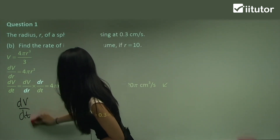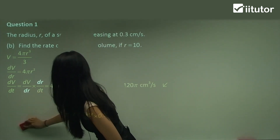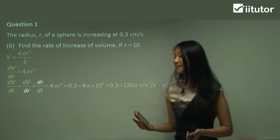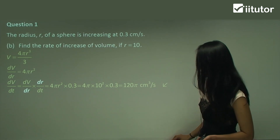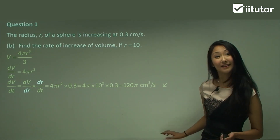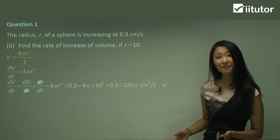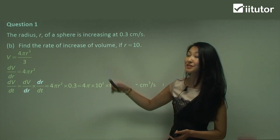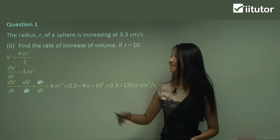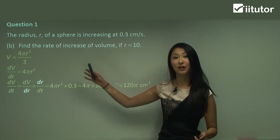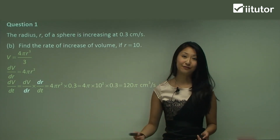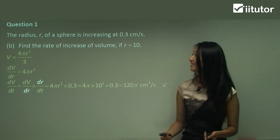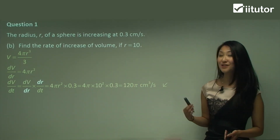You can see that the maths in all of this is not difficult, but what is difficult is finding out where you get the information from. Whenever you see volume, just write out the equation for the volume and differentiate that. So that was question one — let's move on to question two.